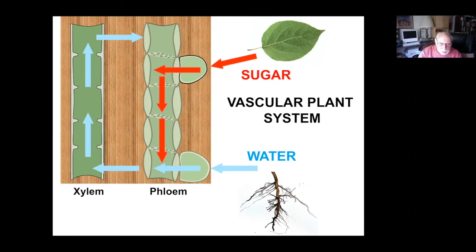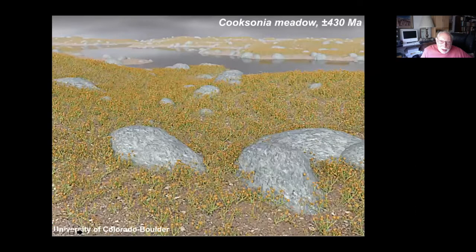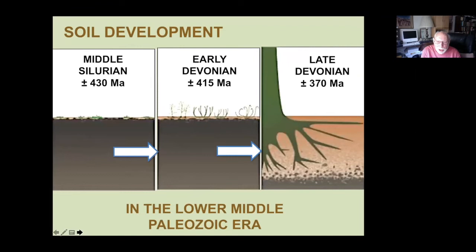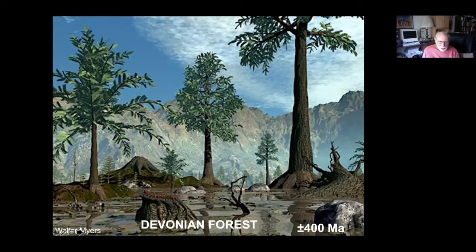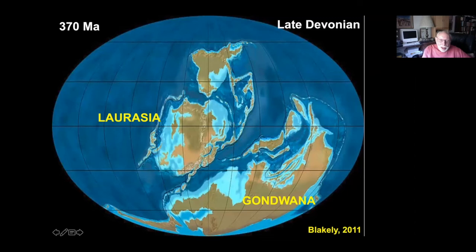Wherever there was water, there was the possibility for plants to grow. But plants were going to move away from the water, and that required the development of a vascular system with two kinds of tubes: the xylem, essentially a watertight water main bringing water from the roots up to the rest of the plant, and the phloem, which took sugar derived from the leaves and distributed it to the rest of the plant for growth. Once plants developed this system, they could draw water from the roots and no longer needed to be tied to standing bodies of water. One plant thought to be transitional to the vascular plants was Cooksonia, found all over the world, which may have formed meadows extending away from the waterline.